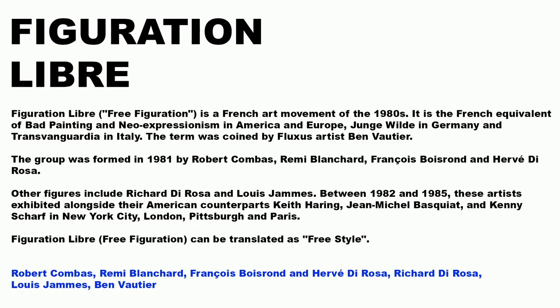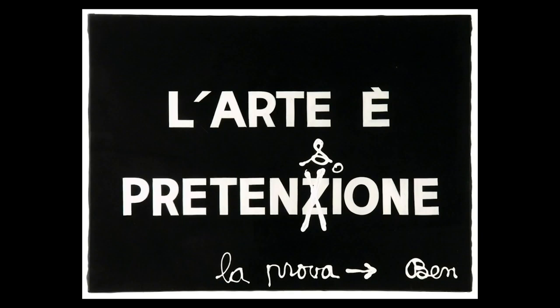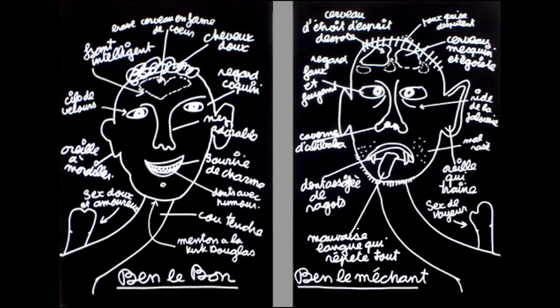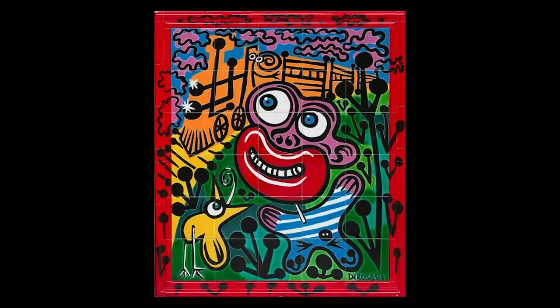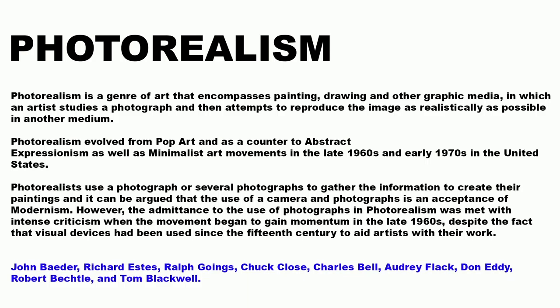Figuration Libre is a French art movement of the 1980s, the French equivalent of bad painting and Neo-Expressionism in America and Europe — Junge Wilde in Germany and Transavanguardia in Italy. The term was coined by Fluxus artist Ben Vautier. The group was formed in 1981 by Robert Combas, Rémy Blanchard, François Boisrond, and Hervé Di Rosa. Other figures include Richard Di Rosa and Louis James, between 1982 and 1985. These artists exhibited alongside American counterparts Keith Haring, Jean-Michel Basquiat, and Kenny Scharf in New York City, London, Pittsburgh, and Paris. Figuration Libre can be translated as freestyle. You can see the work of Robert Combas, Hervé Di Rosa, and Ben, who wrote a lot of words — mostly white on a black background.